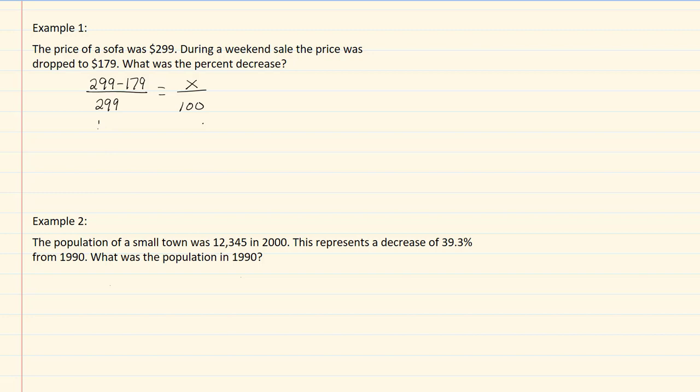299 minus 179 will give me 120 over 299, and again it equals x over 100.